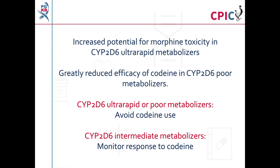Due to the potential for toxic levels of morphine to accumulate in CYP2D6 ultra-rapid metabolizers, and the greatly reduced efficacy of codeine in CYP2D6 poor metabolizers, the guideline recommends that codeine is not used in these patients. The guideline also recommends that CYP2D6 intermediate metabolizers are monitored to determine their response to codeine.